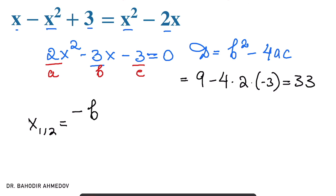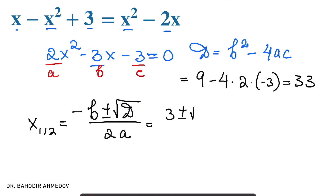The two roots are found using the quadratic formula: minus b plus or minus the square root of the discriminant, divided by 2a. In this case, it's 3 plus or minus the square root of 33, divided by 4. Those are the two values of x which satisfy our initial matrix equation. Thank you very much for your attention. I hope this was helpful for you.